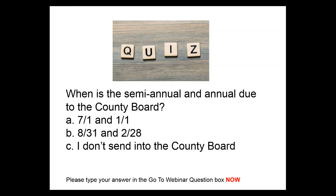Quiz question: when is a semiannual and annual analysis due to the county board? The answer is B — August 31st for the semiannual and February 28th for the annual. That requirement comes straight from the rule.